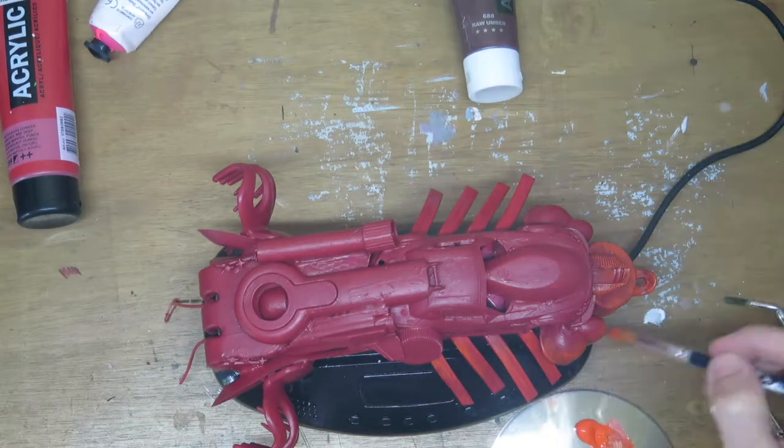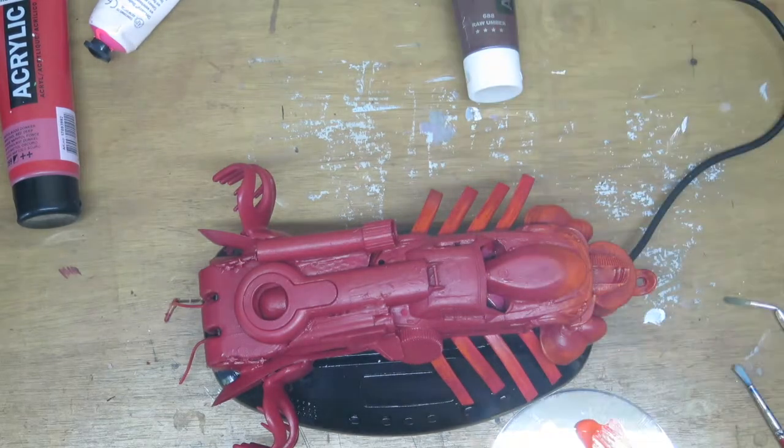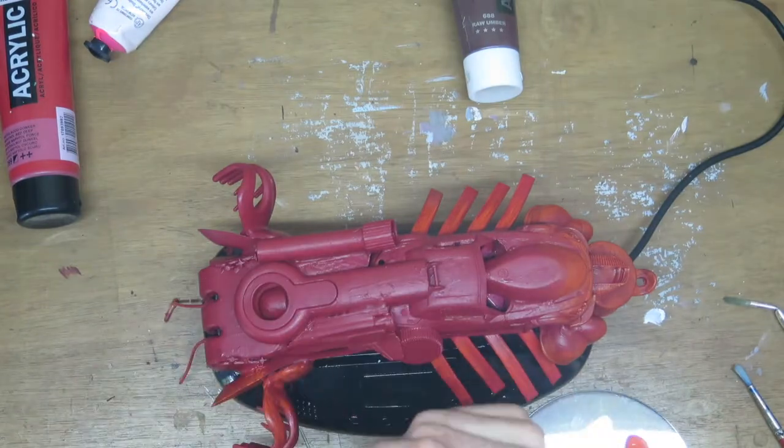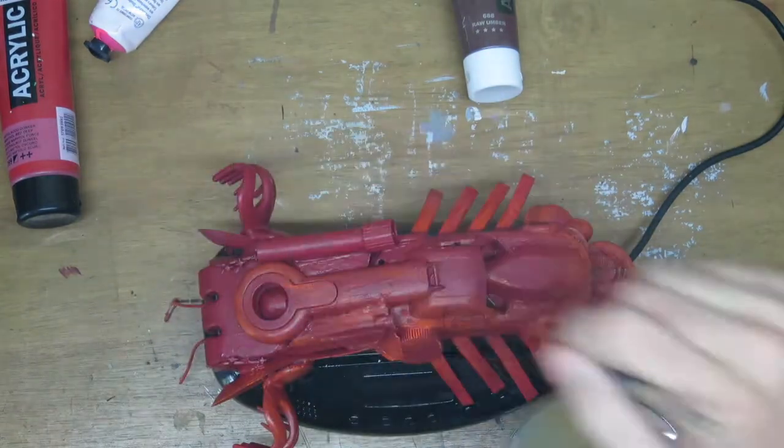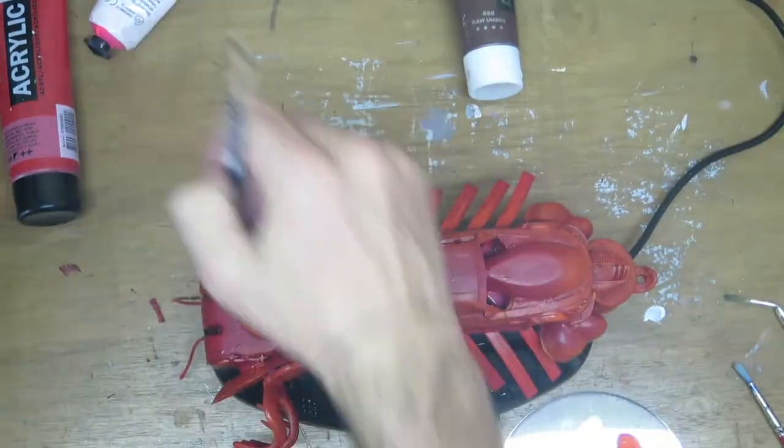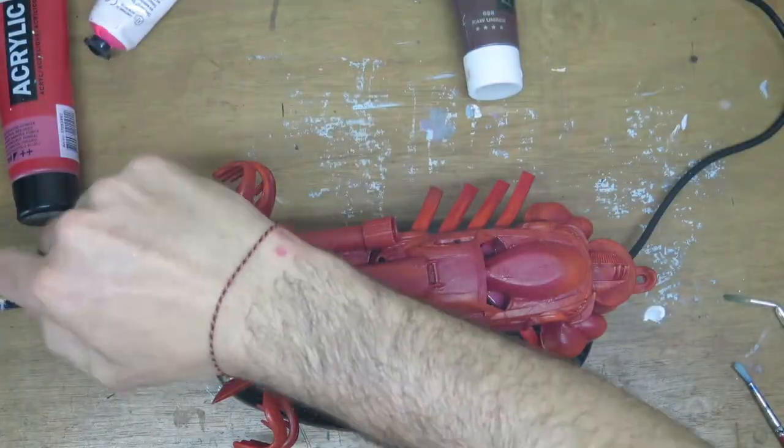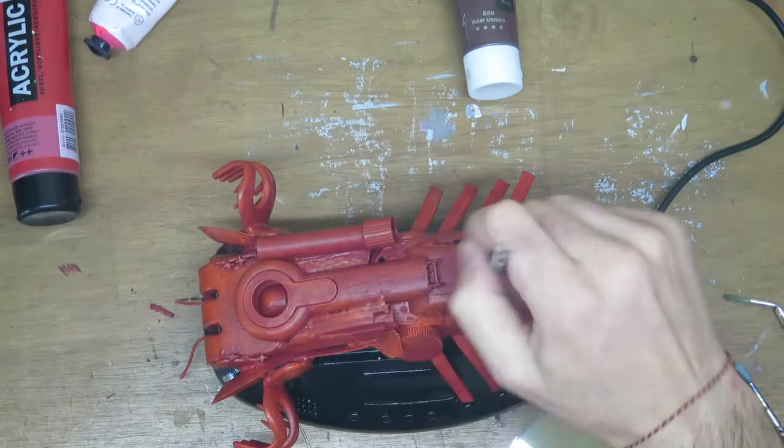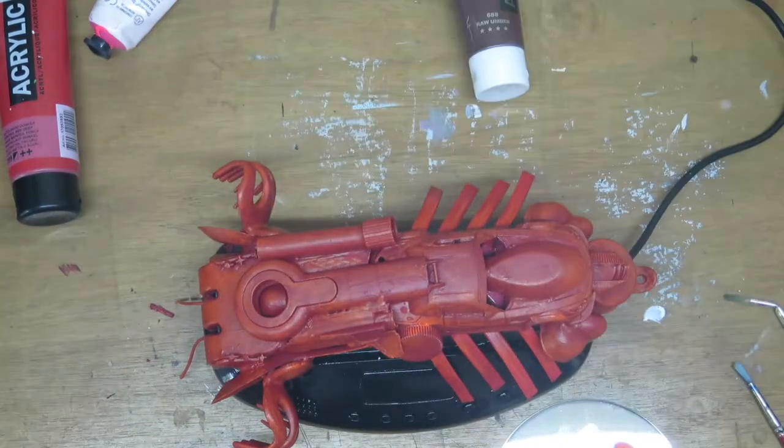This is a classic example of a surrealist object, made from the conjunction of items not normally associated with each other, resulting in something both playful and menacing. Dali believed that such objects could reveal the secret desires of the unconscious.